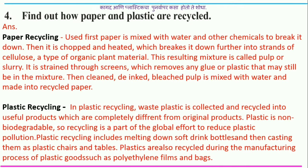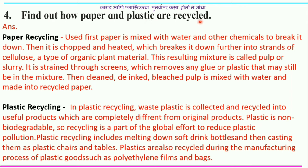Now question number four: find out how paper and plastic are recycled. Used paper is mixed with water and other chemicals to break it down, then it is chopped and heated, which breaks it down further into strands of cellulose — a type of organic plant material. This resulting mixture is called pulp or slurry. It is strained through screens which removes any glue or plastic still in the mixture.